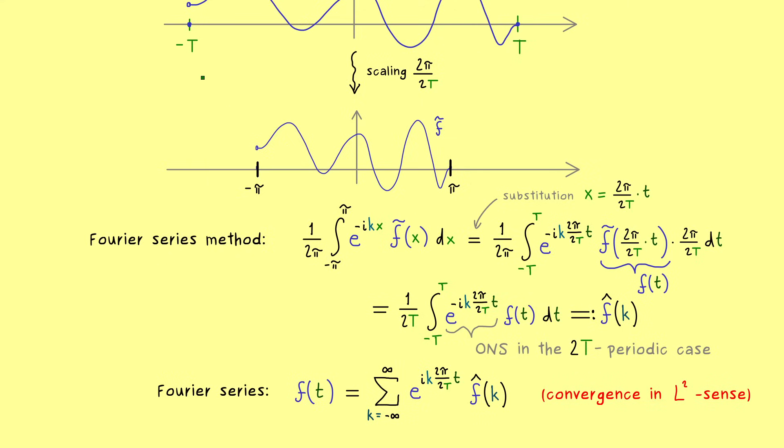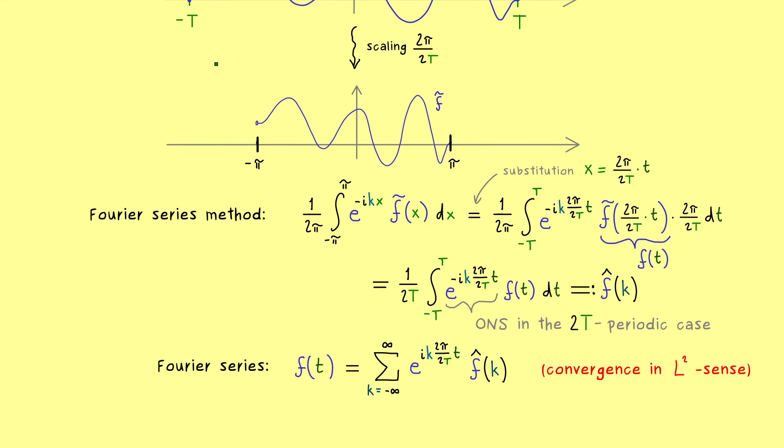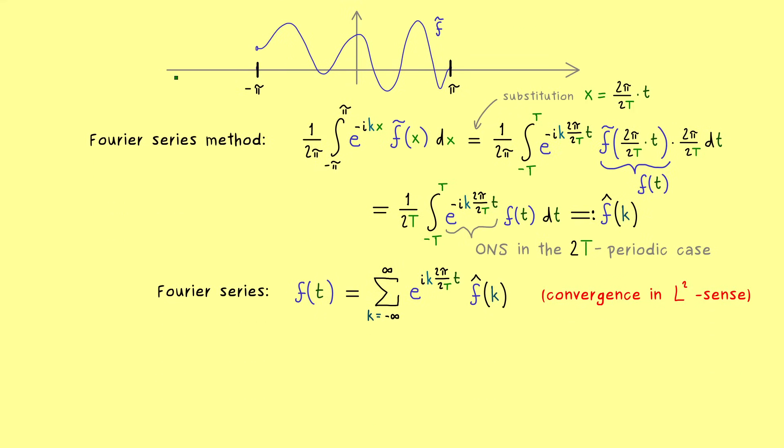However, this T is now changeable, so we can make it larger and larger, such that in a limit we cover the whole real number line. And exactly this is our approach, what would happen in a limit T to infinity. We don't have to be completely strict what we actually mean by the limit, because it's just a motivation here. Therefore let's first rewrite the formula and then apply some limit process.